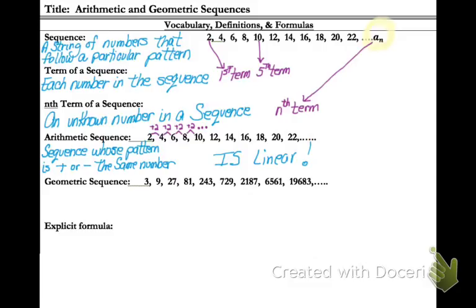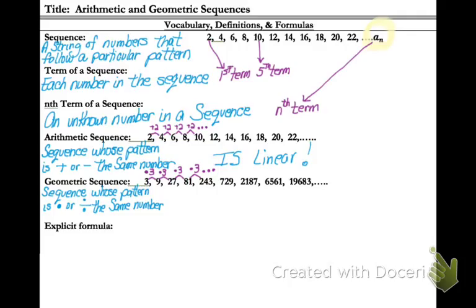Geometric sequences are sequences whose pattern is multiplying or dividing by the same number. In this sequence, we're multiplying by 3 each time. Geometric sequences may or may not be exponential, because in exponential functions the b value — the rate of change — could never be negative. There is no restriction like that in a geometric sequence, so we don't say geometric sequences are always exponential.